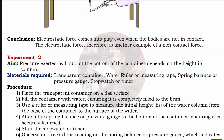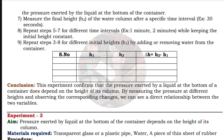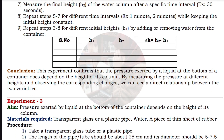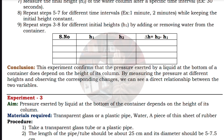The second experiment's aim is: pressure exerted by liquid at the bottom of a container depends on the height of its column. Cover the materials required, procedure, and conclusion. You have to write in this way for all five experiments.